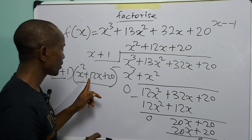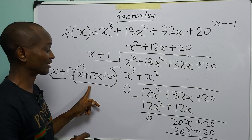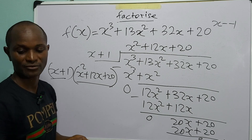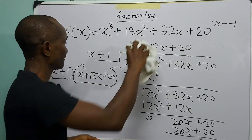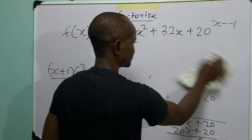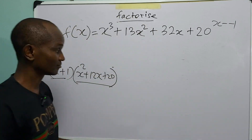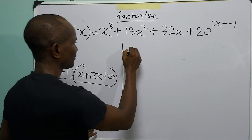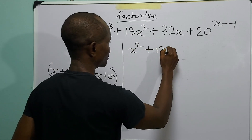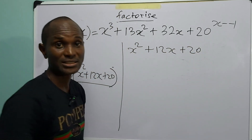The next and last step is to check whether we can further factorize this quadratic expression. We have x² + 12x + 20.